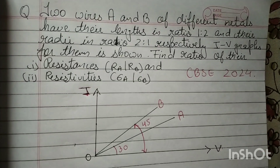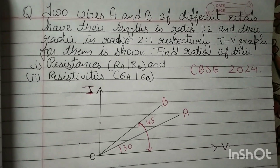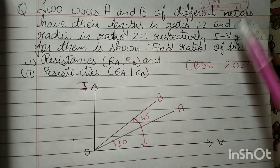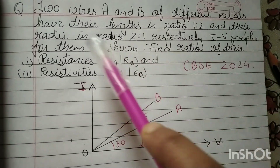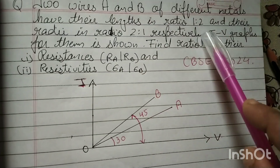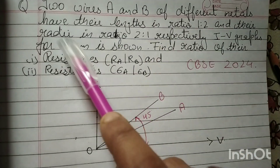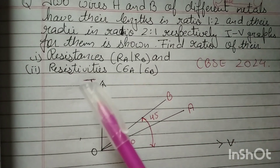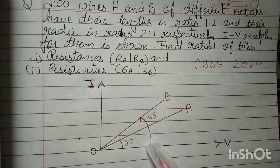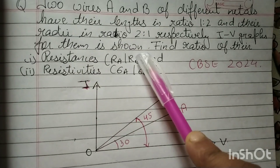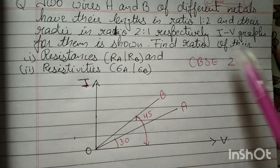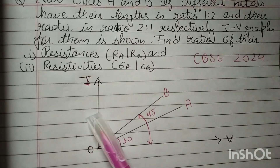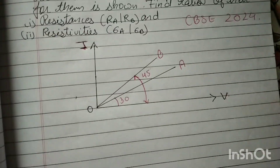Good afternoon students. Next question. Two wires A and B of different metals have their lengths in a given ratio and their radii in a given ratio. There is an IV graph shown for them. Find the ratio of their resistances and their resistivities.